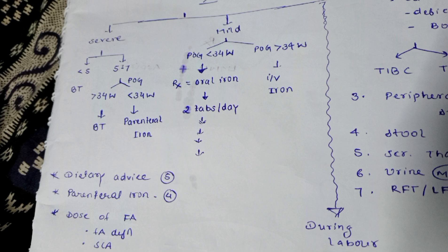When prescribing oral iron, inform the patient about side effects and give dietary advice — avoid tea and coffee, increase Vitamin C and protein in diet. If gestation is greater than 34 weeks in moderate cases, give parenteral iron. Four types are available: iron sucrose, iron dextran, iron sorbitol, and ferric carboxymaltose. Iron sucrose is preferred as others have side effects. One ampoule contains 50 mg; two ampoules (100 mg) are mixed in 100 mL normal saline, given three times a week, maximum 200 mg at a time. Iron sucrose requires no test dose.